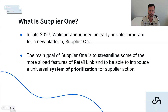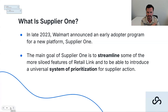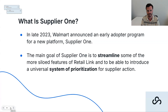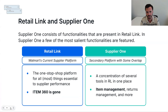More recently, certain updates have made Supplier One essentially essential for suppliers. From the very beginning, Walmart's idea behind Supplier One was to streamline some of the siloed Retail Link apps into a single platform so they could have a better universal system of prioritization specifically for supplier action - taking everything from item management to returns to deductions and creating a decision-making system for prioritization.